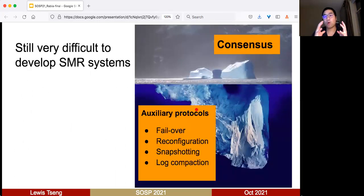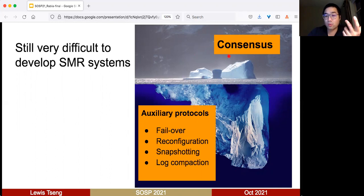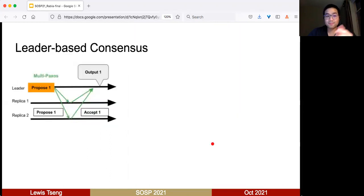But despite all this effort, it's still very difficult to develop SMR systems based on our experience, because consensus is only one part of the story. To support a real SMR system, you still need tons of auxiliary protocols. Like both Raft and Paxos and all the Paxos family, it's just very difficult to develop and integrate them. And this is why all these protocols are based on the notion of leader. The leader proposes something and then replicas say yes, I agree, and then the leader can output that.